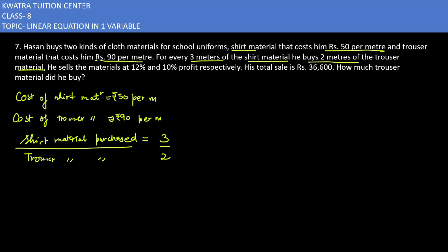He sells the materials at 12 percent and 10 percent profit respectively. 12 percent profit is on the first item, which is shirt material. 10 percent profit is on trouser material. His total sale is 36,600. How much trouser material did he buy? We need to find how much trouser material he purchased, and shirt material as well.